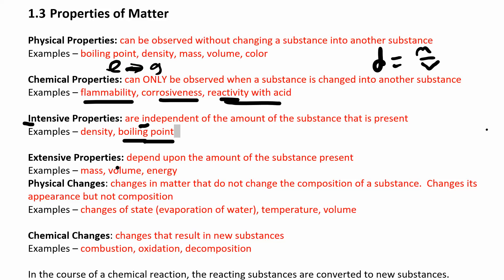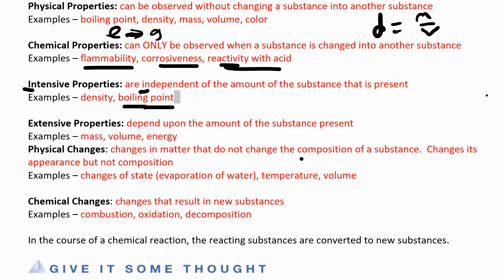Extensive properties do depend on the amount of substance you have — things like energy, mass, and volume. If you have more mass, you have more substance present. If you have a greater volume, you have more substance present. So extensive properties depend on the amount of substance you have.